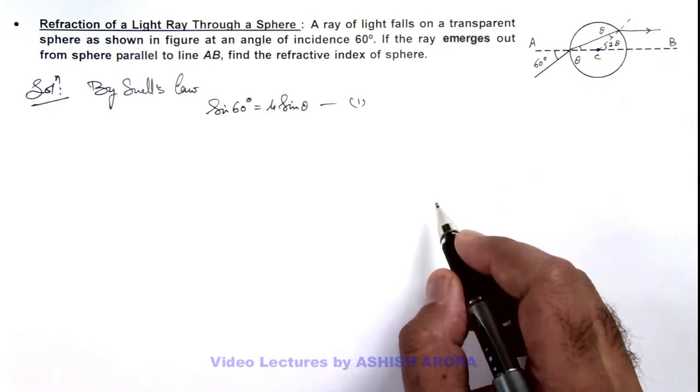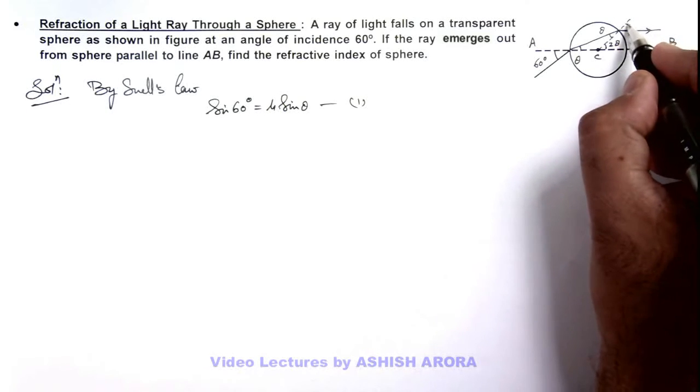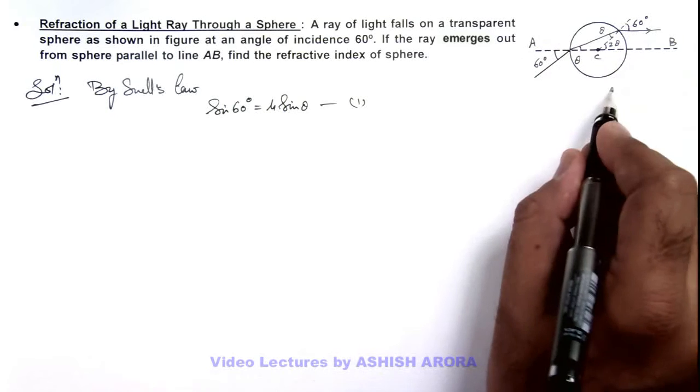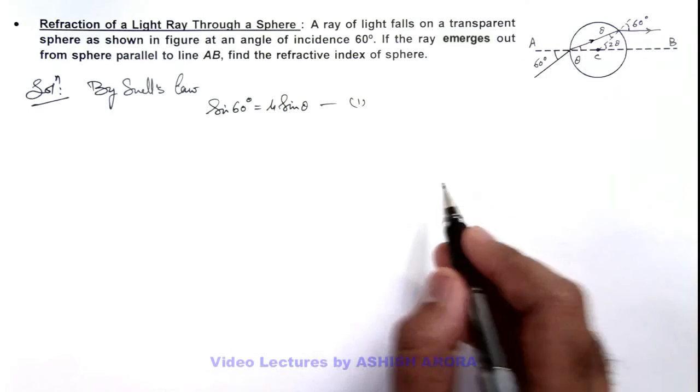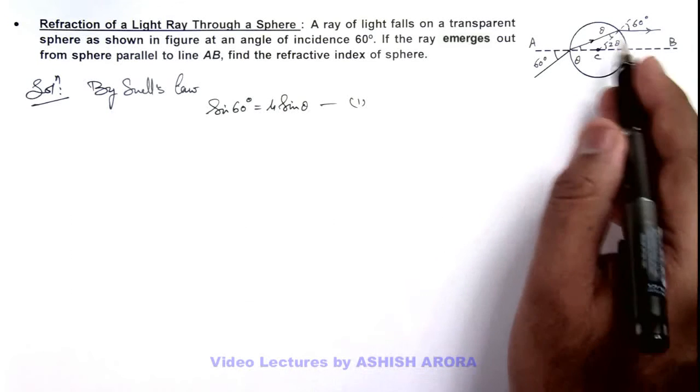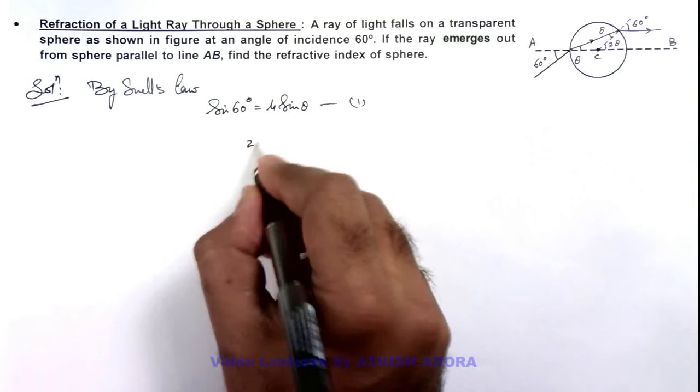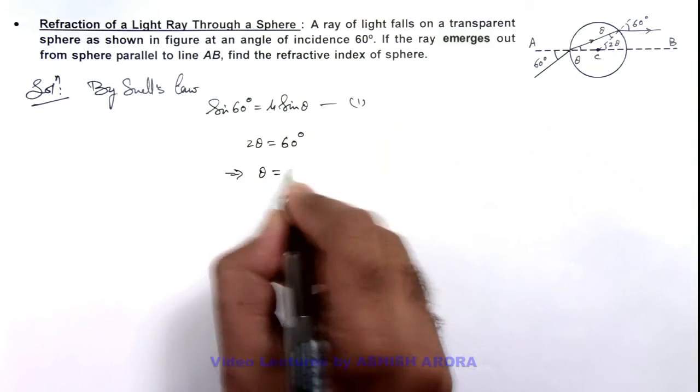If this light is finally getting parallel to line AB, this angle should be 60 degrees, because the light ray must deviate from its initial direction by 60 degrees for this to be possible. If this angle is 60 degrees, then 2 theta equals 60 degrees, which implies theta equals 30 degrees.